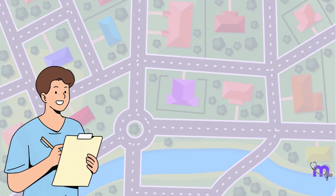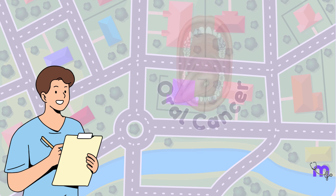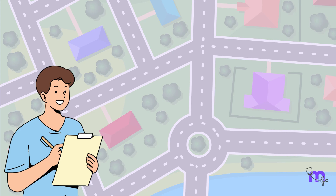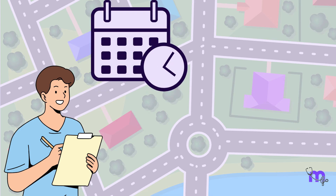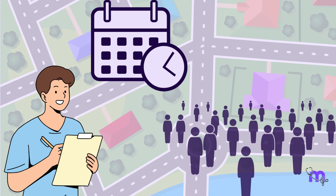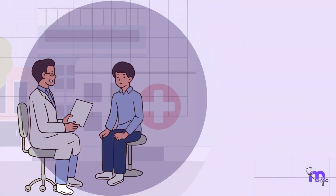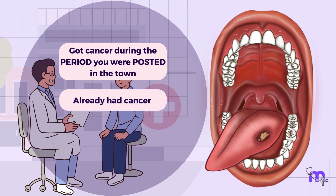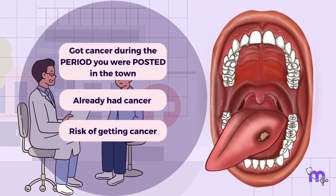Let's say that you are a research student who has been given a task to find out the spread of oral cancer in a particular area. Your research is limited to a specific period with a defined set of population. In your practice, you will encounter three types of patients: those who unfortunately got cancer during the period you were posted in the town, those who already had cancer, and those who are at risk of getting cancer.